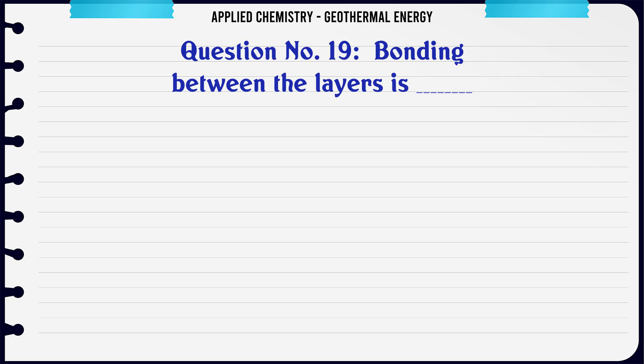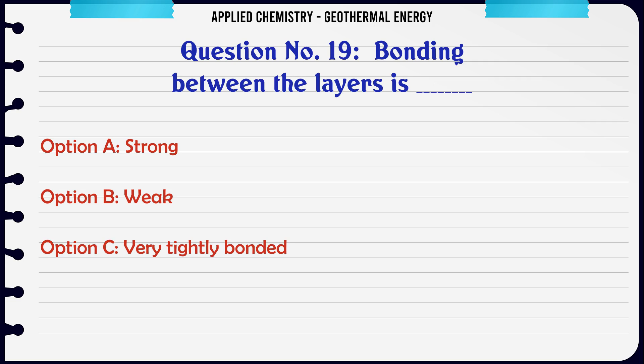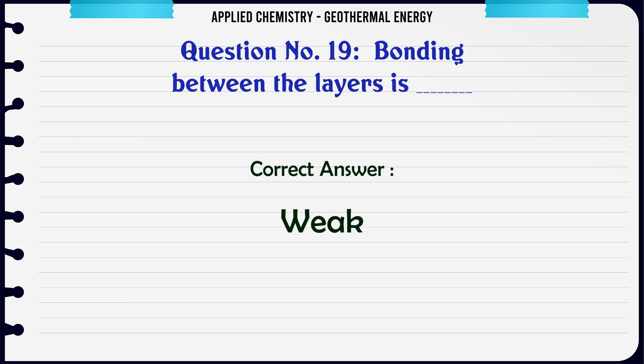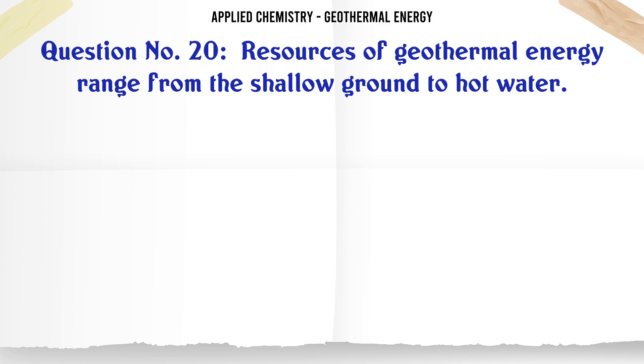Bonding between the layers of graphite is: A: Strong, B: Weak, C: Very tightly bonded, D: Not bonded. The correct answer is weak.